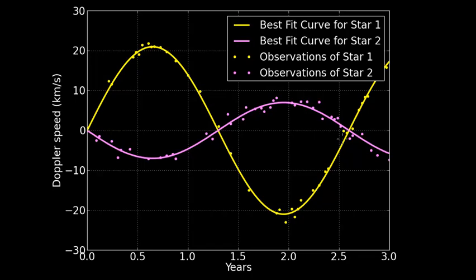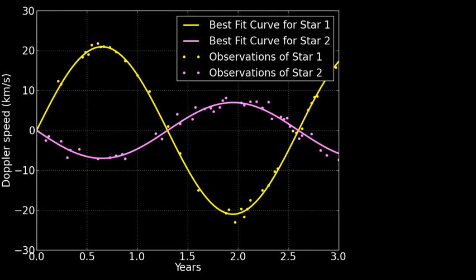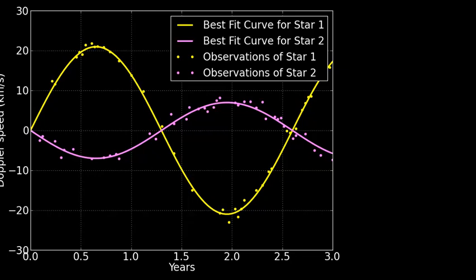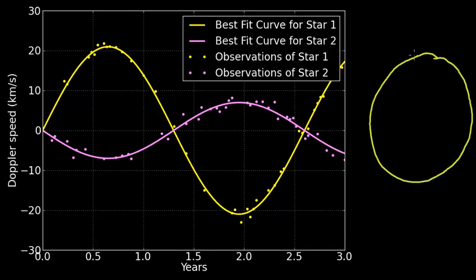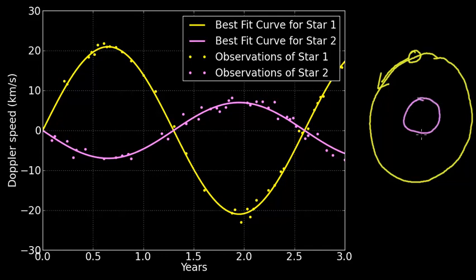Let's draw this system. If I were drawing it from the top view, we have one star orbiting about a center, and we have another star — I'll just draw the circle here — it's not orbiting as much, and orbiting in the opposite way. So whenever we see one coming towards us, there's one going away from us. Our point of view is from over here.